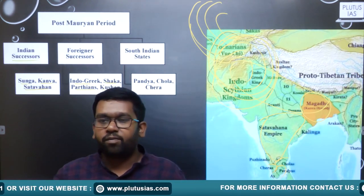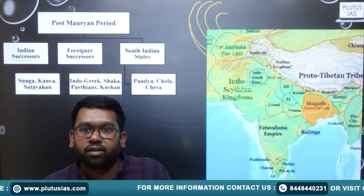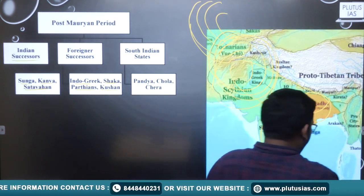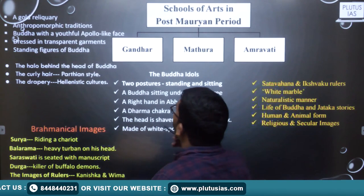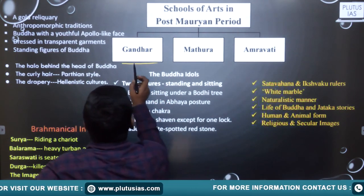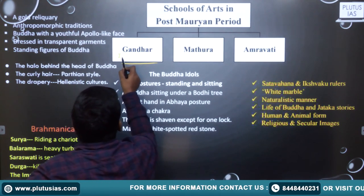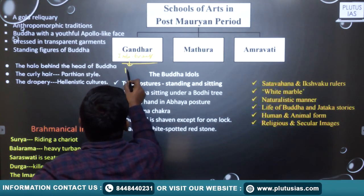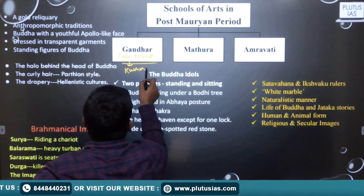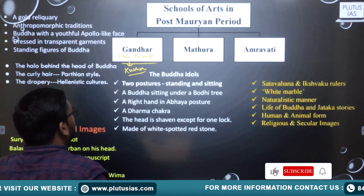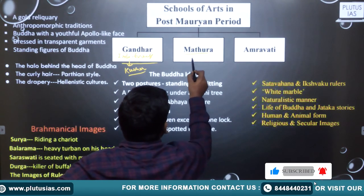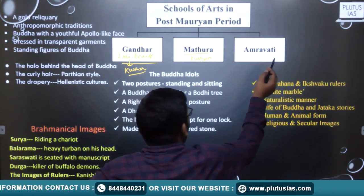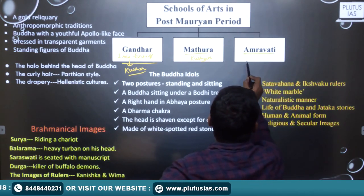One such change was in art. Post-Mauryan art comprised three different schools. School one was Gandhara, which was started by Indo-Greeks and followed by Kushanas. We see major differences in Gandhara art in this period. Then the second was Mathura, which was patronized by the Kushan empire.